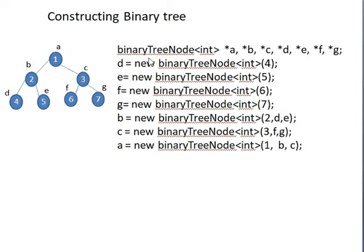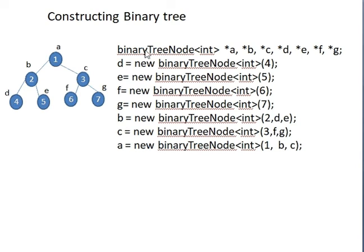In the main program, write the syntax: BinaryTreeNode pointer A, B, C, D, E, F, G. Once you create these, nothing happens yet - you've only defined the pointers and the node format. To construct the tree in its proper form, first construct the terminal nodes. This binary tree has height three and four terminal nodes: D, E, F, G. To construct a terminal node, we use new BinaryTreeNode.